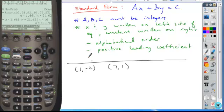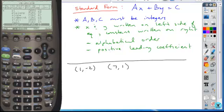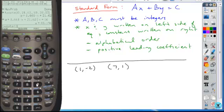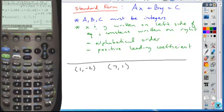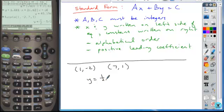Step one for this would be to find the equation. We're going to use our two points function. We're going to enter our coordinates: one, negative two, followed by seven, one. We're going to enter them as a list. Notice here I get the equation y equals one half x minus five halves. This would be slope intercept form.